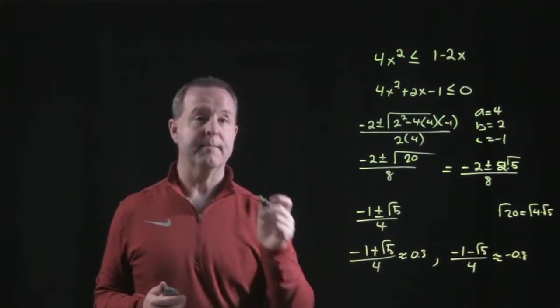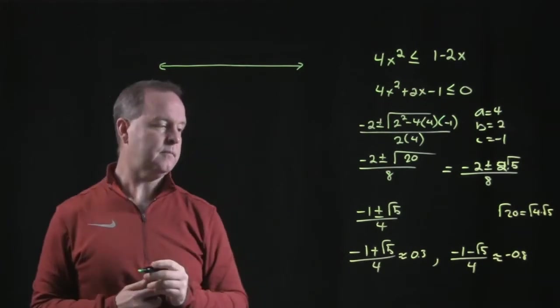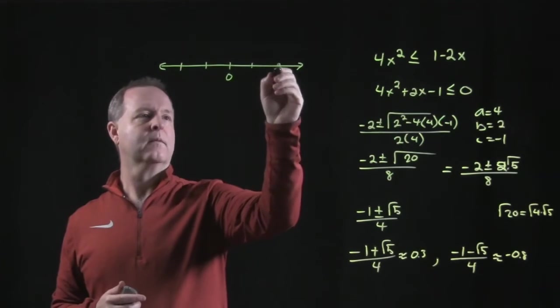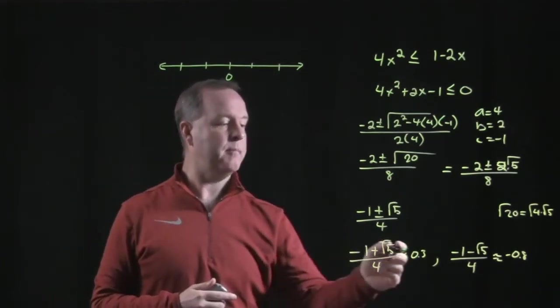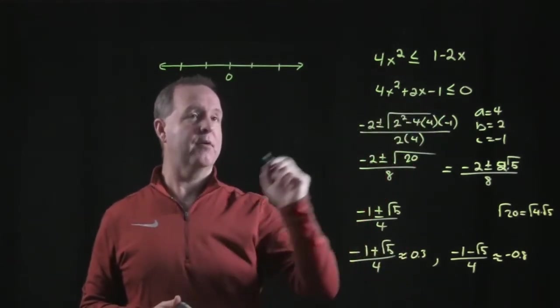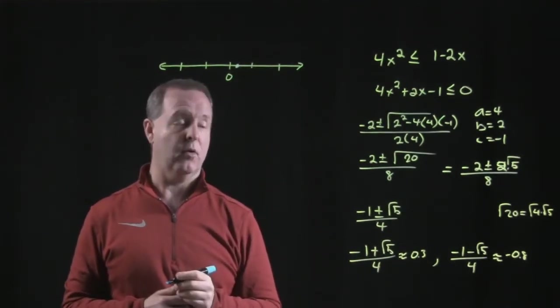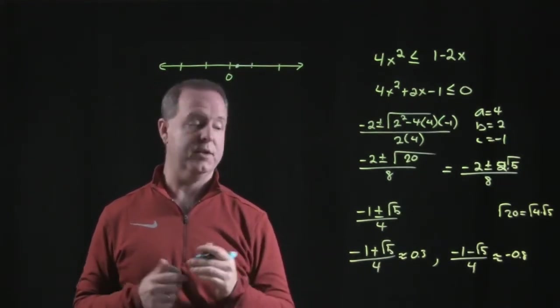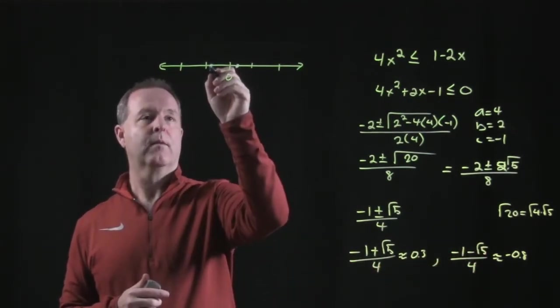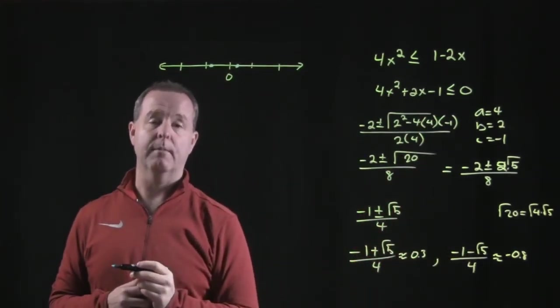So there we have our two boundary points. Draw a number line. One boundary point is 0.3 and it's also an inclusive boundary point. Wherever 0.3 is at, right about there, I'm going to fill it in or put a hard bracket on it once I know which direction it goes. And then likewise with negative 0.8, right there. It's also an inclusive point because it's greater than or equal, so I'll fill in a hard point at that as well.